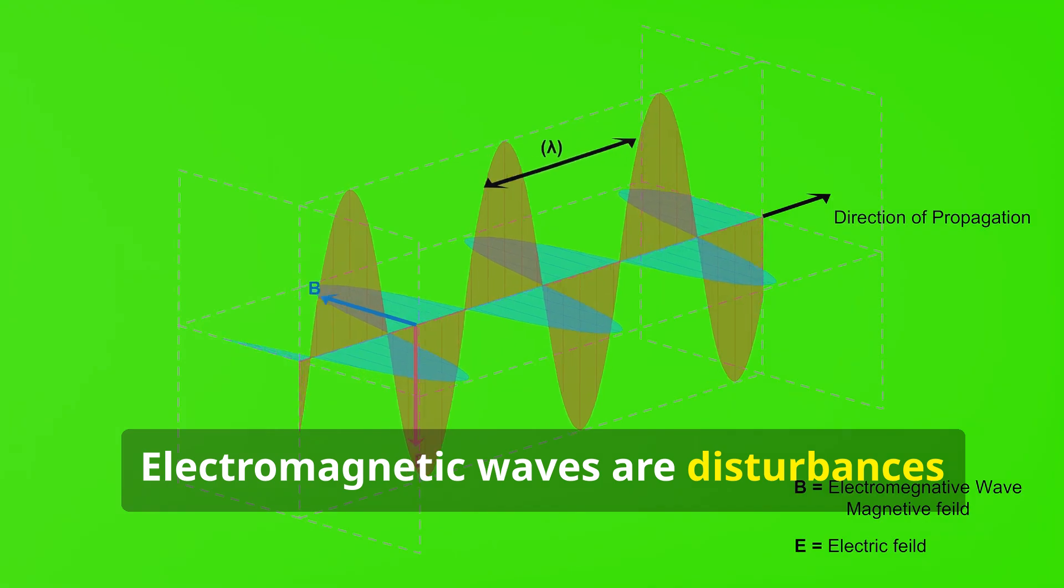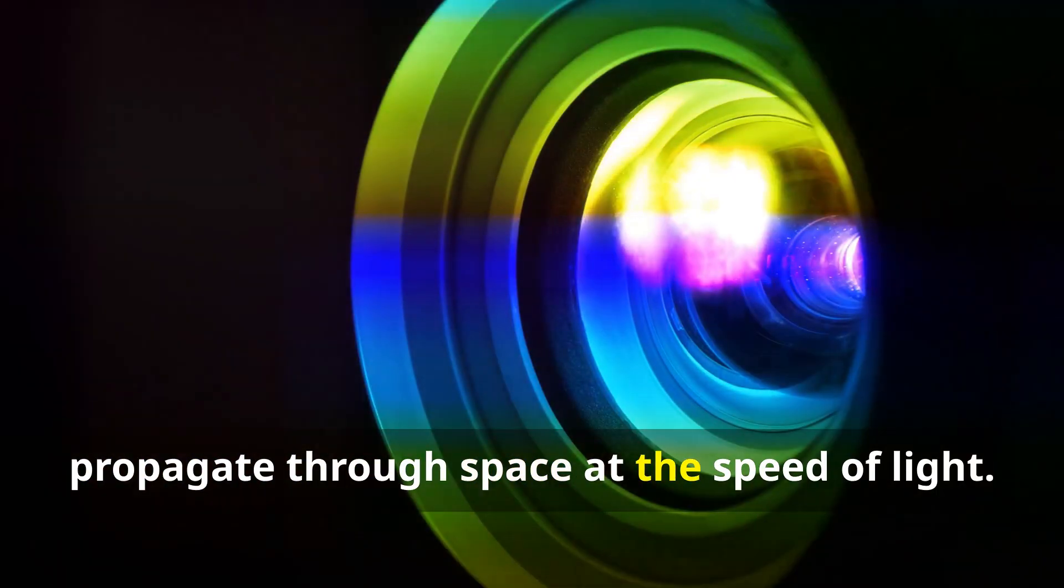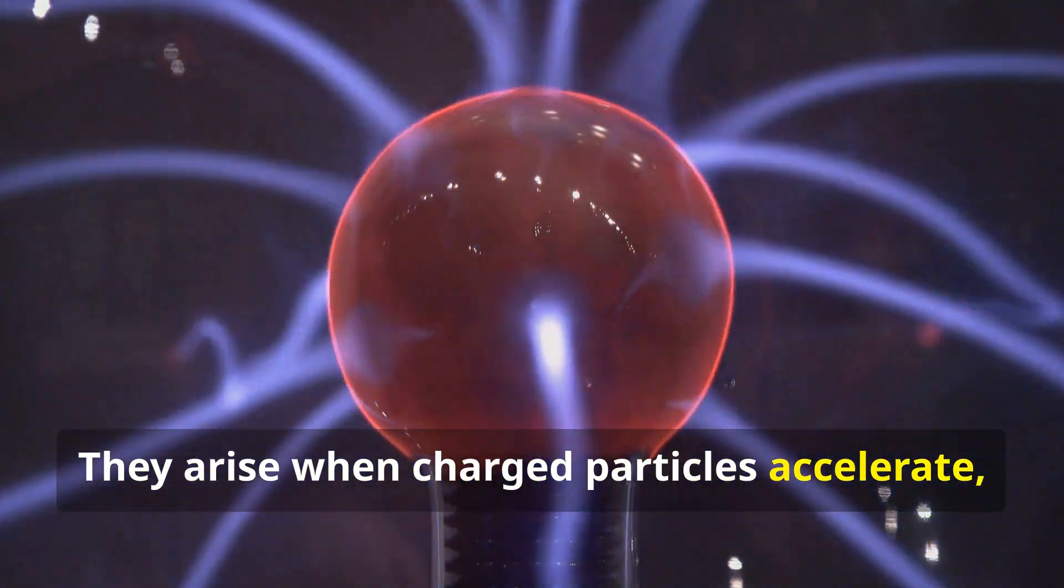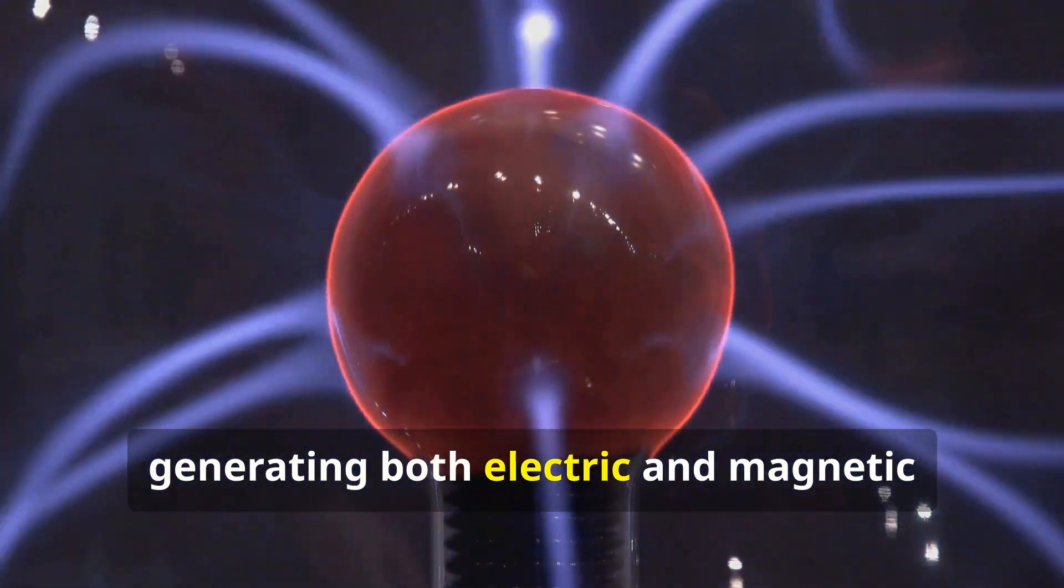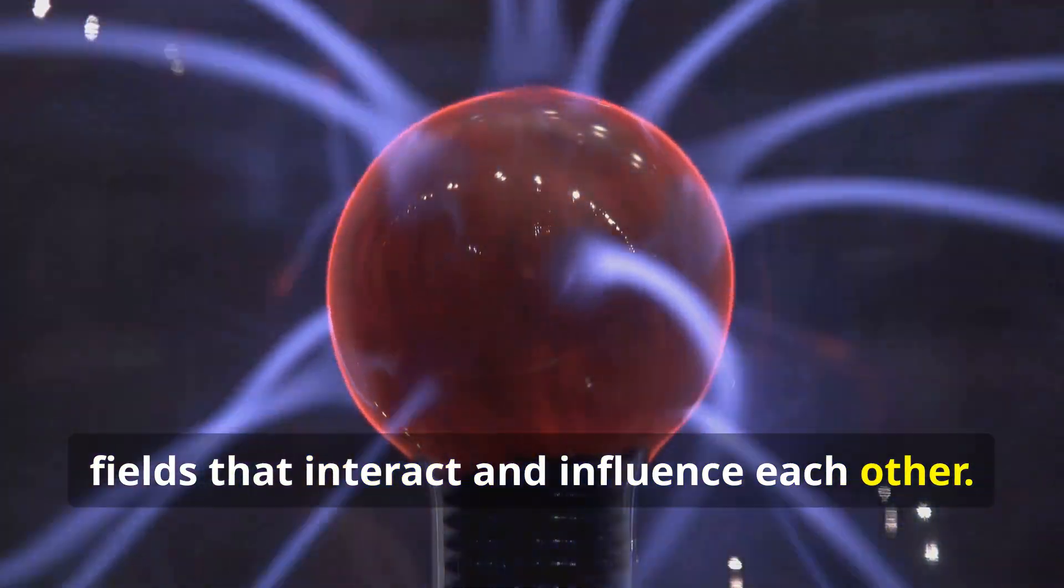Electromagnetic waves are disturbances in electric and magnetic fields that propagate through space at the speed of light. They arise when charged particles accelerate, generating both electric and magnetic fields that interact and influence each other. These waves span a broad spectrum,